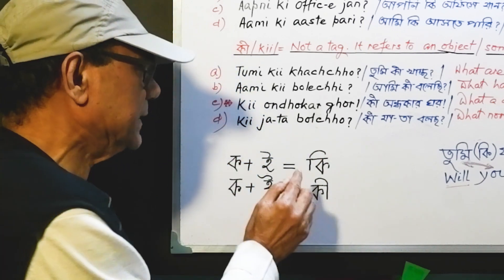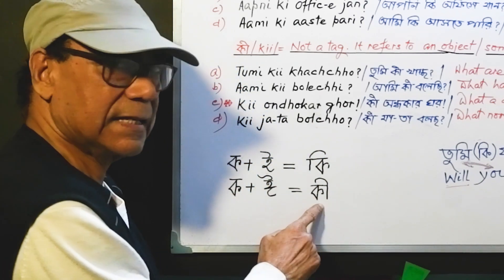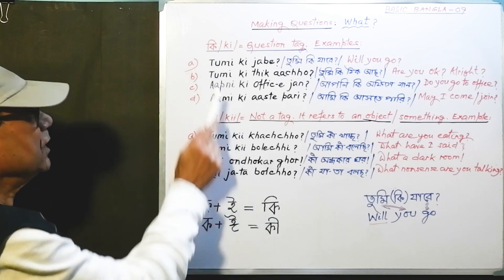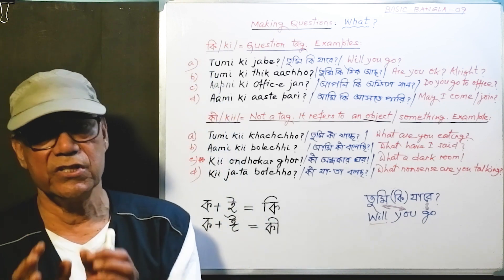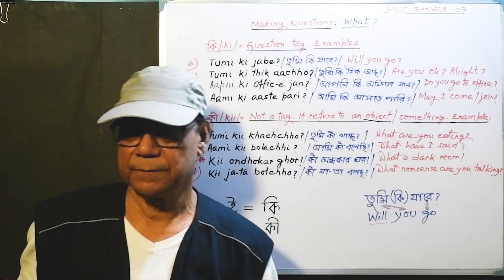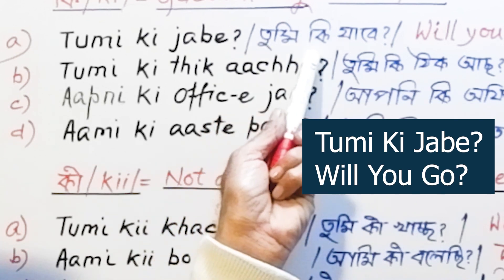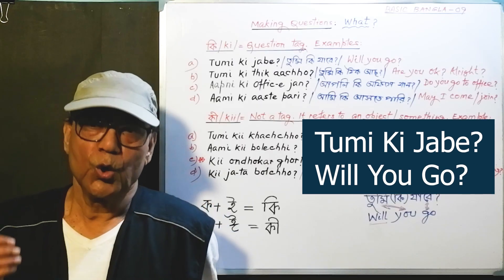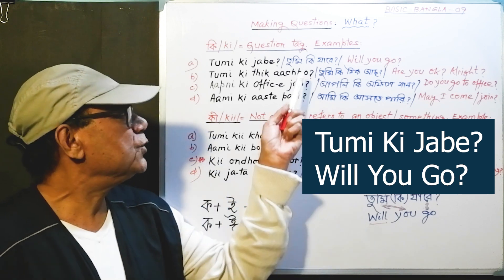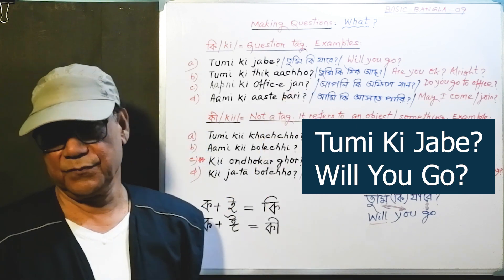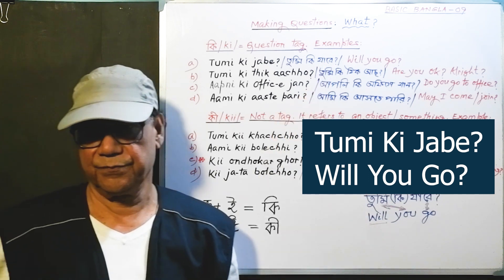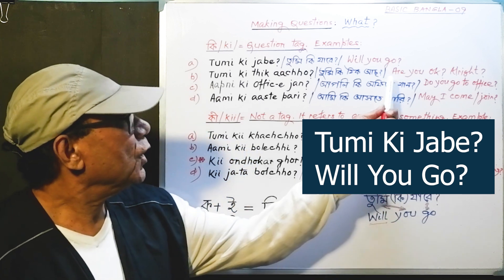We are just talking about this ki — the unstressed ki. This ki is a question tag. Example: 'tumi ki jabe' — tumi ki jabe — that means 'will you go?' You see there is no stress on this ki. If there is any stress, it is on jabe, the verb.